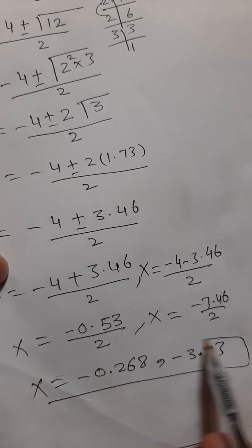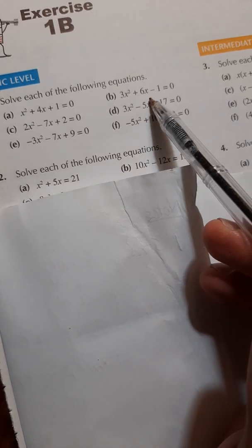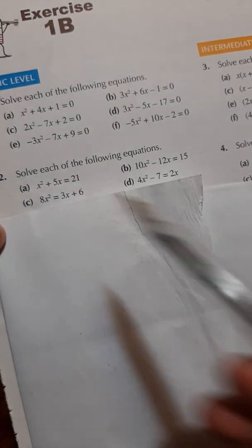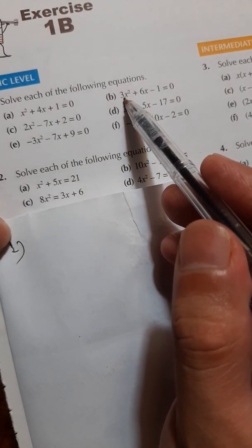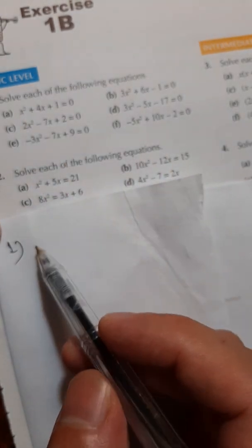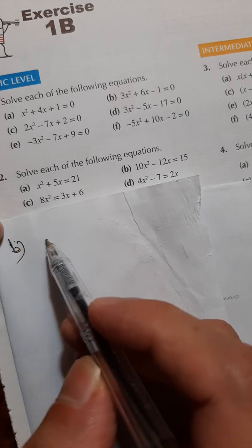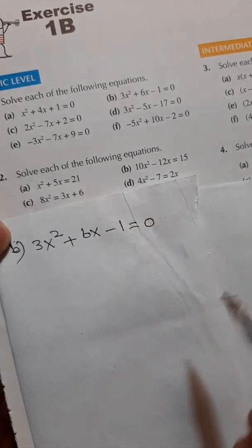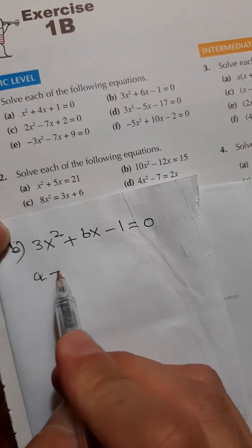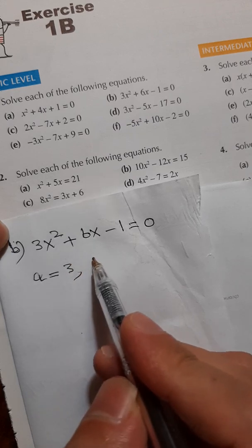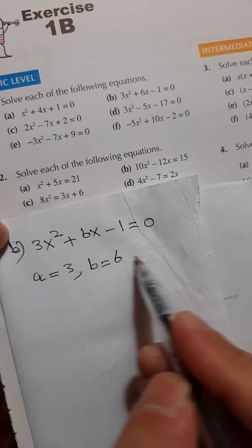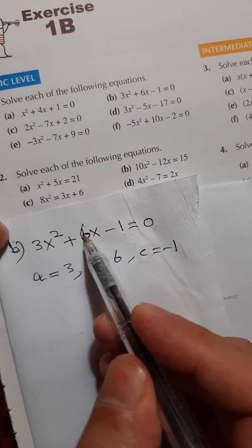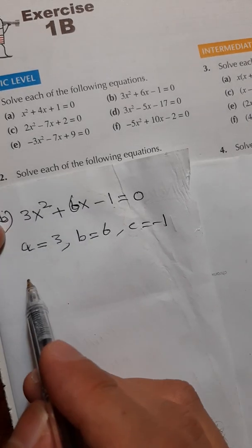Now question number one, part b. We skip parts c and d as they follow the same procedure. Part b is 3x² + 6x - 1 = 0. The coefficient of x² is a, which equals 3. The coefficient of x is b, which equals 6. The constant is c. Applying the quadratic formula: x equals minus b plus or minus square root of b² minus 4ac, divided by 2a.